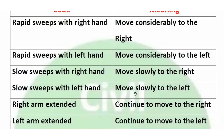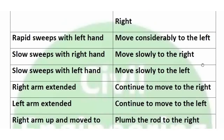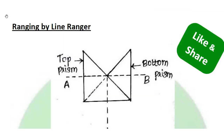Next objectives shown in the exam — Match the following. A Line Ranger is an optical instrument. Another method of direct ranging is Ranging by Line Ranger.